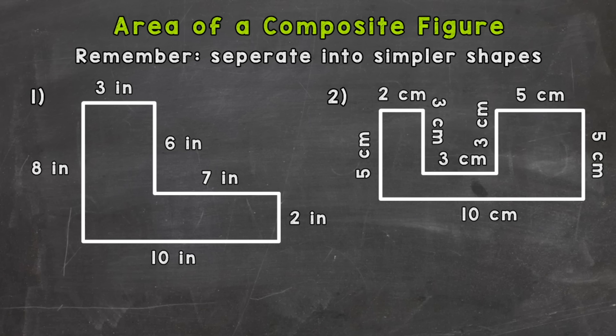For number one, the first thing I want to do is again separate into simpler shapes. So I'm going to cut this into two rectangles, and I'm going to draw a dashed line here to represent where I'm cutting it. Now I'm going to name the left rectangle A and the right rectangle B, and that's going to help keep me organized as I work through this problem.